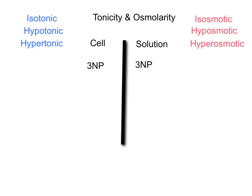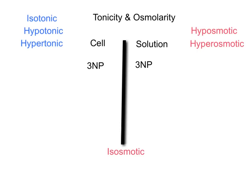In the first condition, the cell has three non-penetrating solute particles, and the solution also has three. This is the number you look at to determine osmolarity. Because each of the cell and the solution has three, the osmolarity is isoosmotic — the solution is isoosmotic to the cell, and the cell is isoosmotic to the solution.